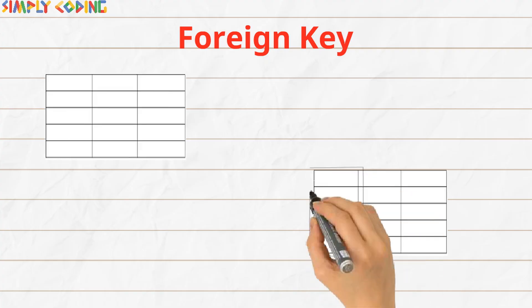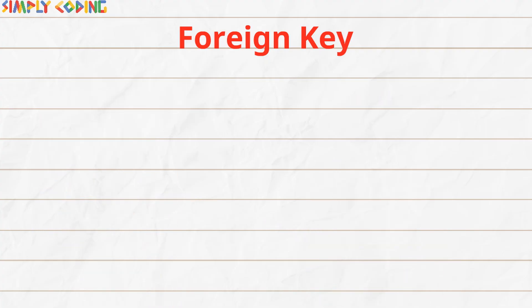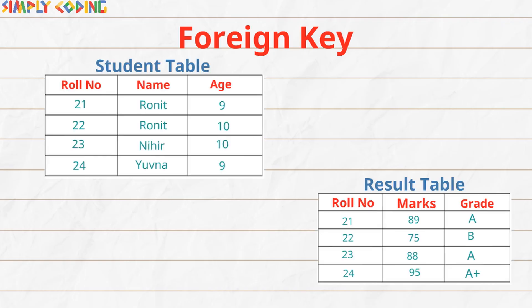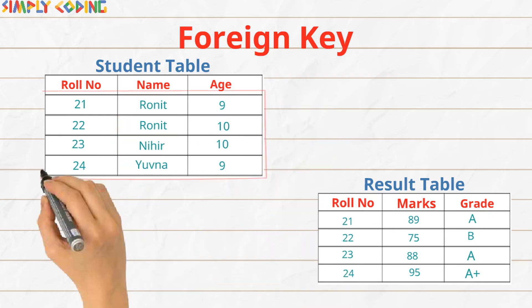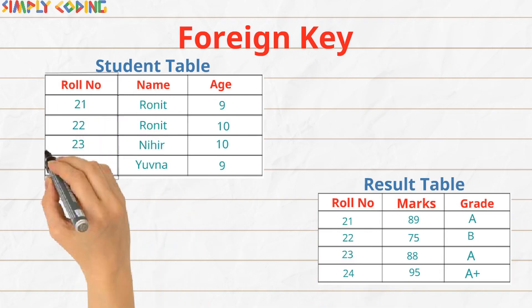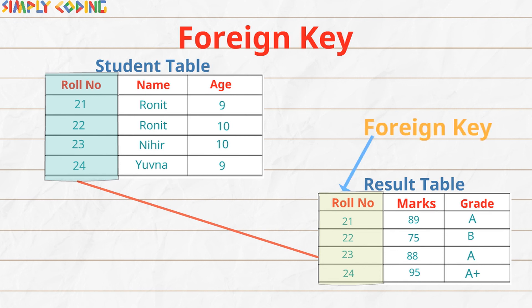They are linked through a foreign key. A foreign key is a field that references the primary key of another table. For example, we have a student table and a result table. The student table has a list of all students in the class, and all results are in the result table. Role number is the primary key, and the result table has a foreign key role number which links it to the student table. This is the foreign key which references the primary key in another table.